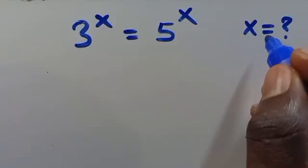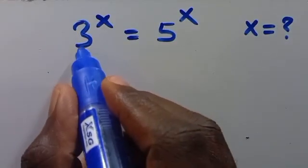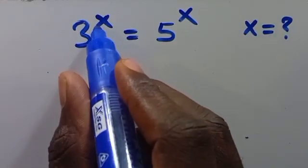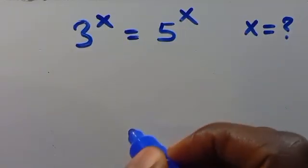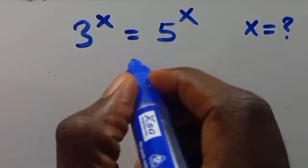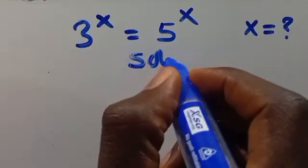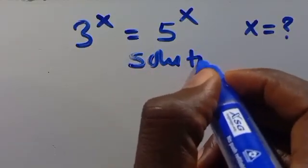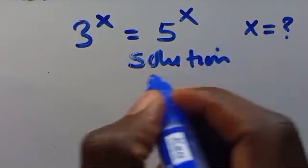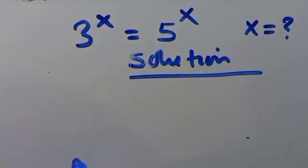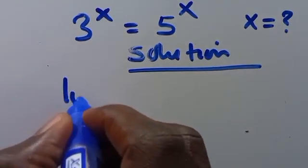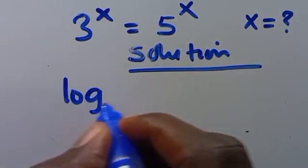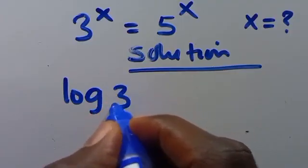What is the value of x given that 2 to the power of x equals 5 to the power of x? So from here, let's have it to be the solution. Let's introduce log.